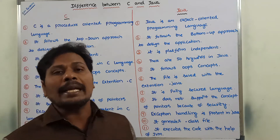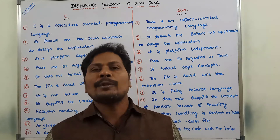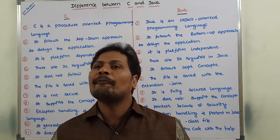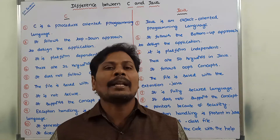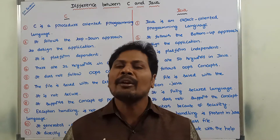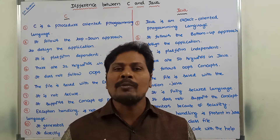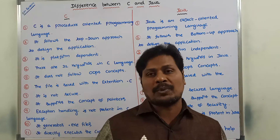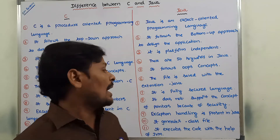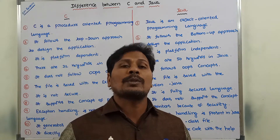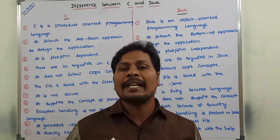Next: Exception handling is not present in C language. We have to use exception handling mechanism whenever any error occurs — for example, divide by zero exception, array index out of bounds exception. C language does not support the exception handling mechanism. Whereas in Java, exception handling is supported using the try, catch, and finally keywords.